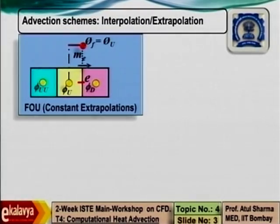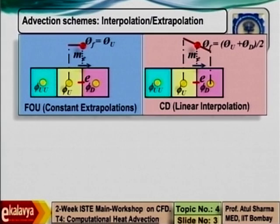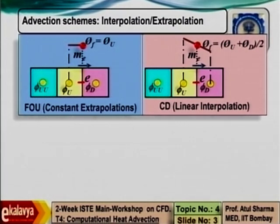I had shown you four different types of advection schemes along with their derivations. The idea is that locally we assume some variation — in the first order upwind scheme, locally we assume the variation is constant, which is called constant extrapolation. Here I am showing the expressions assuming flow is in the positive x direction. Similarly, you can do this for flow in the positive y direction. This scheme is applied on all faces of the control volume — all four faces in a 2D control volume.